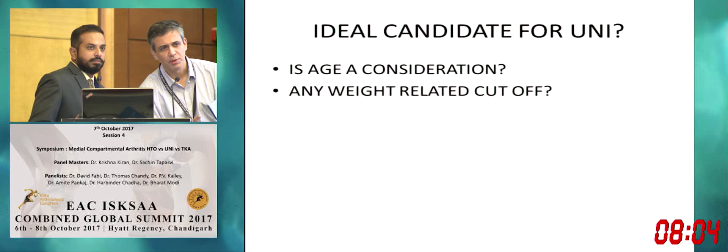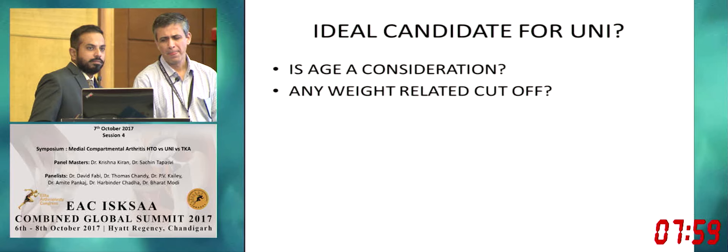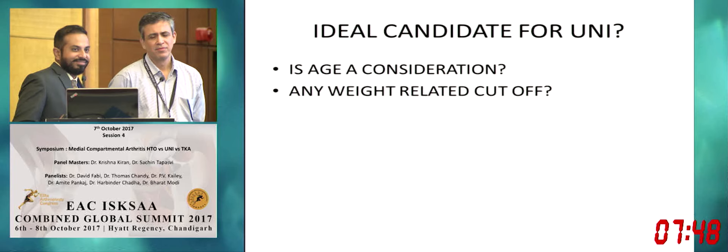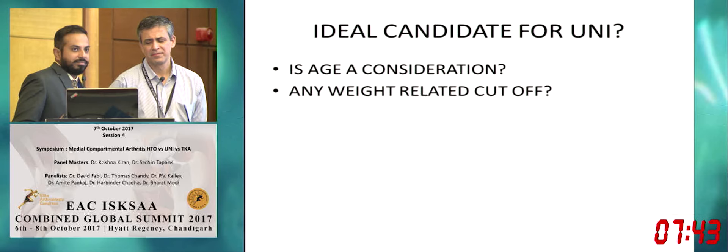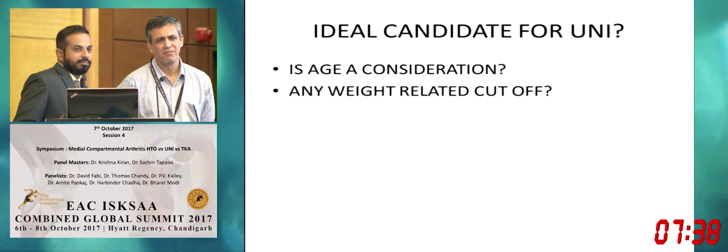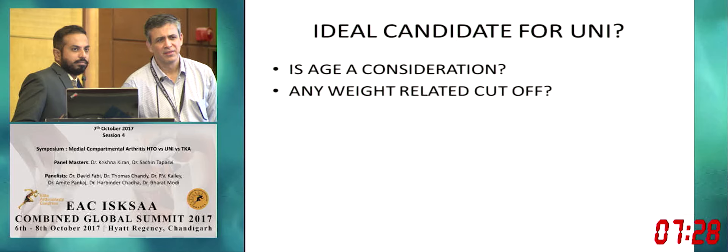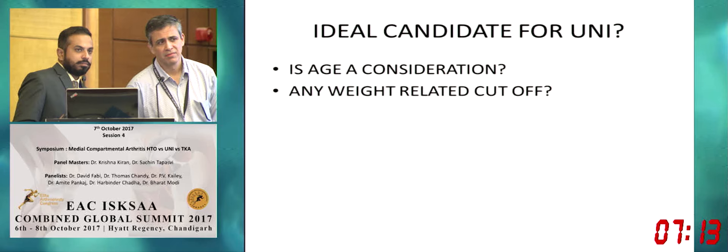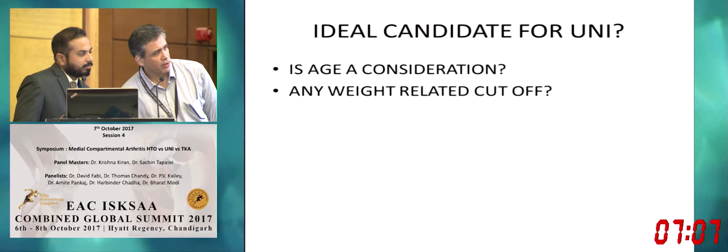The Oxford group has expanded the indications considerably compared to the original single point. But there are two contraindications even the Oxford group acknowledges: one is post-traumatic osteoarthritis, and the second is post-HTO. So for the general audience, the message should be that post-traumatic osteoarthritis — uni is not a good choice. It seems there are two problems: one biologic and one mechanical. I wanted to hear the panel's thoughts on using mesenchymal stem cells as an addition to treatment when you restore the mechanics. Does anybody have experience with mesenchymal stem cells for such pathology?